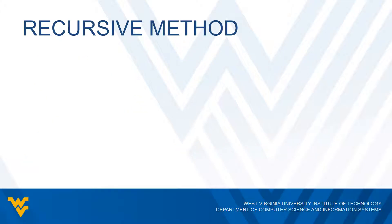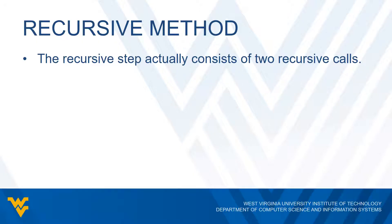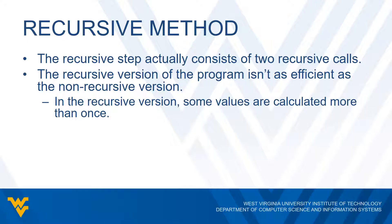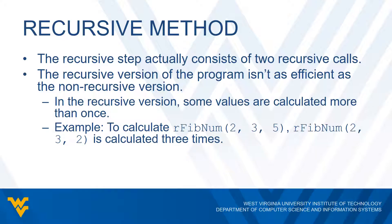A few things to mention about this particular recursive method. What makes it a little different is that the recursive step actually consists of two recursive calls. This isn't very common, but there are some cases where we use this — Quicksort is another example where we have two recursive calls. What we find is that the recursive version of this program is not as efficient as the non-recursive version because of these additional recursive calls. Some values are calculated more than once. For example, if we wanted to calculate RFibNum(2, 3, 5), we would actually calculate RFibNum(2, 3, 2) three times.